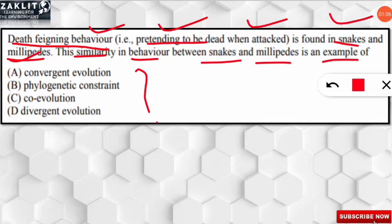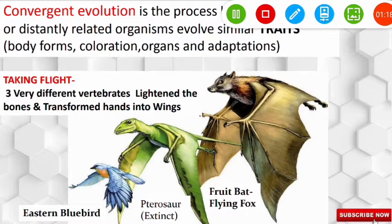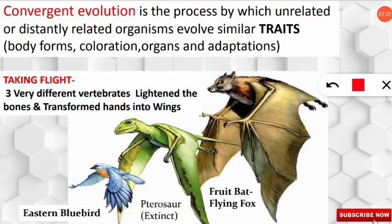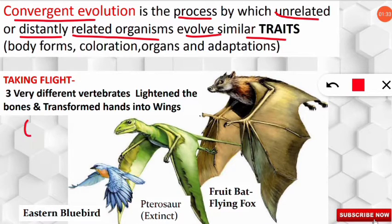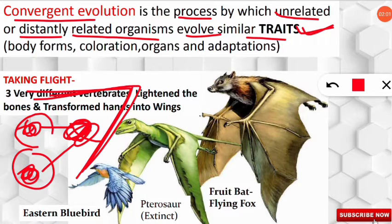The correct answer is that this behavior shows convergent evolution. Convergent evolution is the process by which unrelated or distantly related organisms evolve similar traits. For example, suppose there are two different animals from the past — as generations pass, they develop a particular similar trait. They are distant relatives, not closely related, but they develop very similar characters. It is called convergent evolution because, as you can see in the diagram, traits converge from distant relatives.